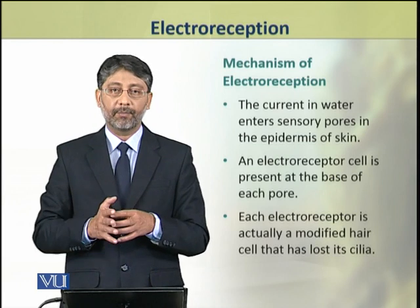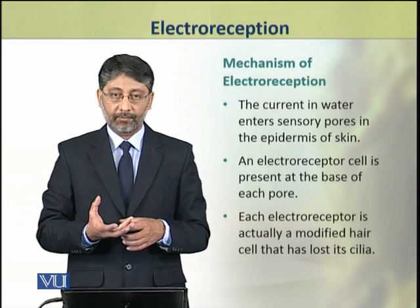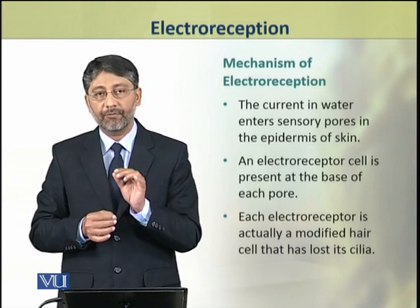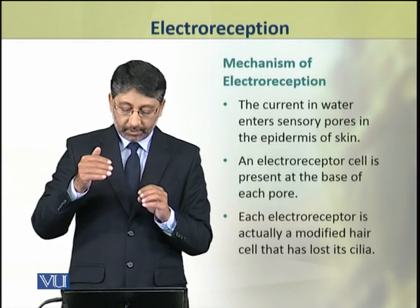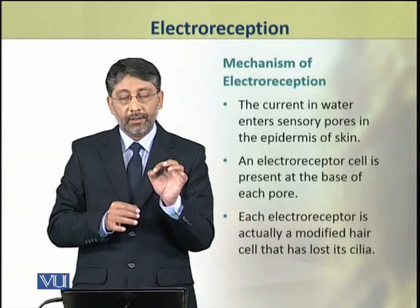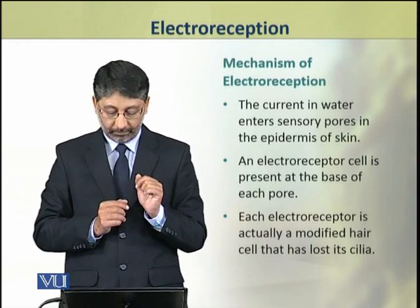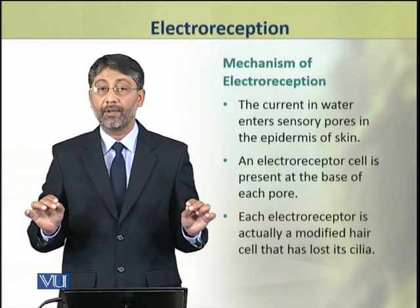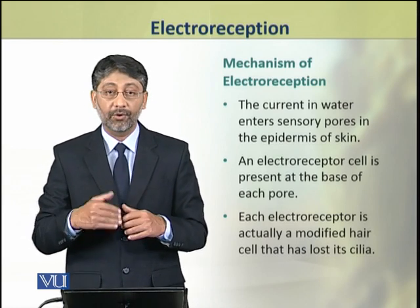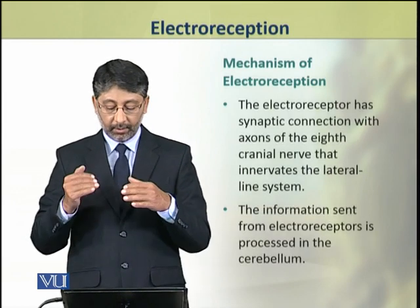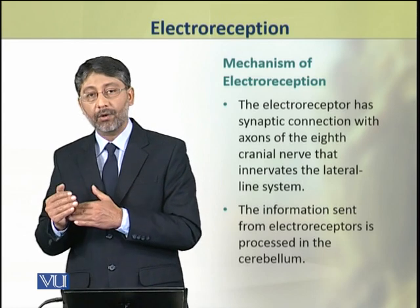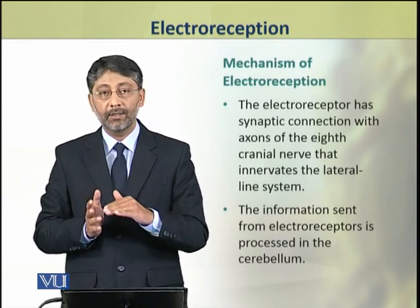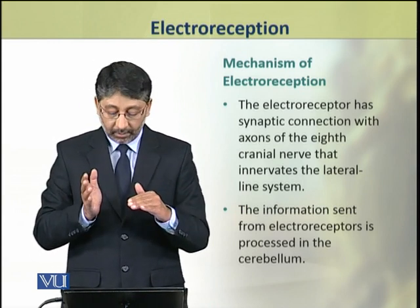Now we shall discuss the mechanism of electroreception. In water, the current enters the animal through sensory pores present in the epidermis of the skin. The pores of the skin have an electroreceptor cell at their base. This electroreceptor is actually a hair cell but it is modified and has lost its cilia. The electroreceptor has synaptic connections with the axons of the 8th cranial nerve. The brain is involved in electroreception in these animals.